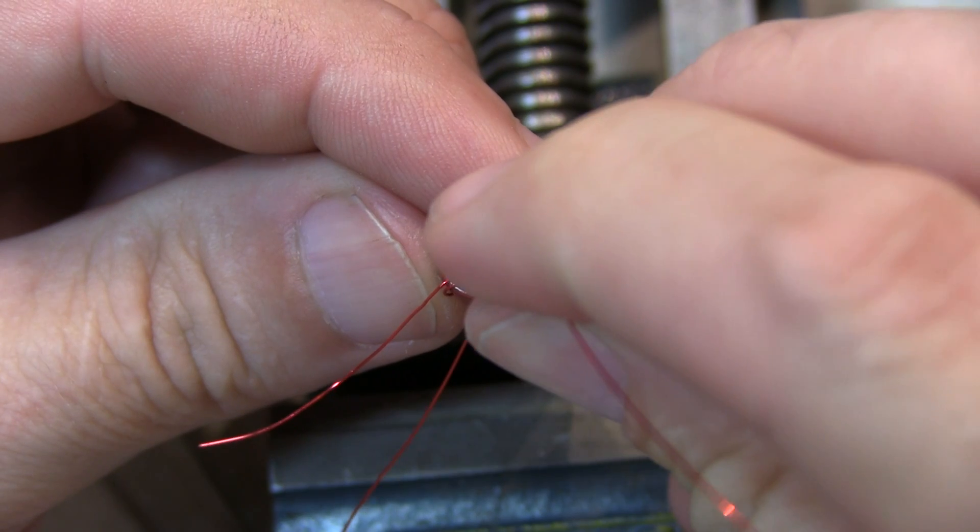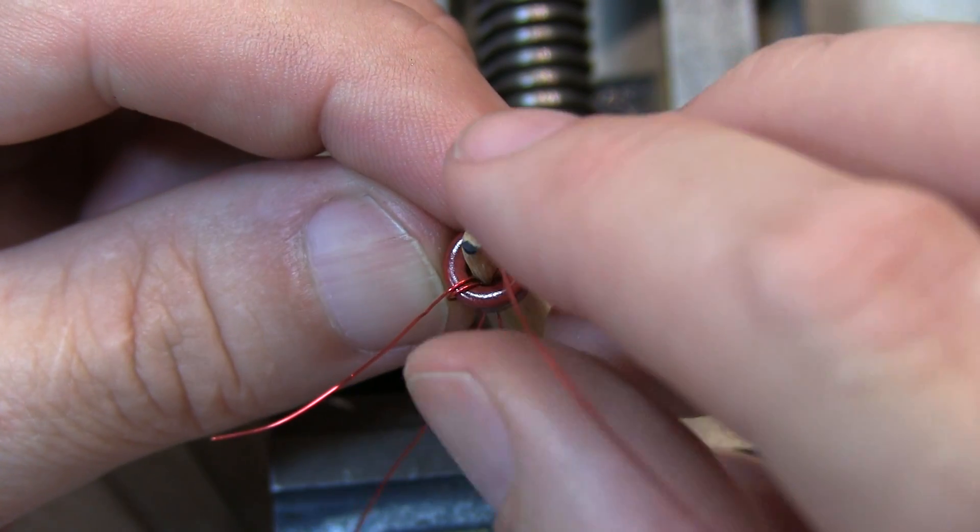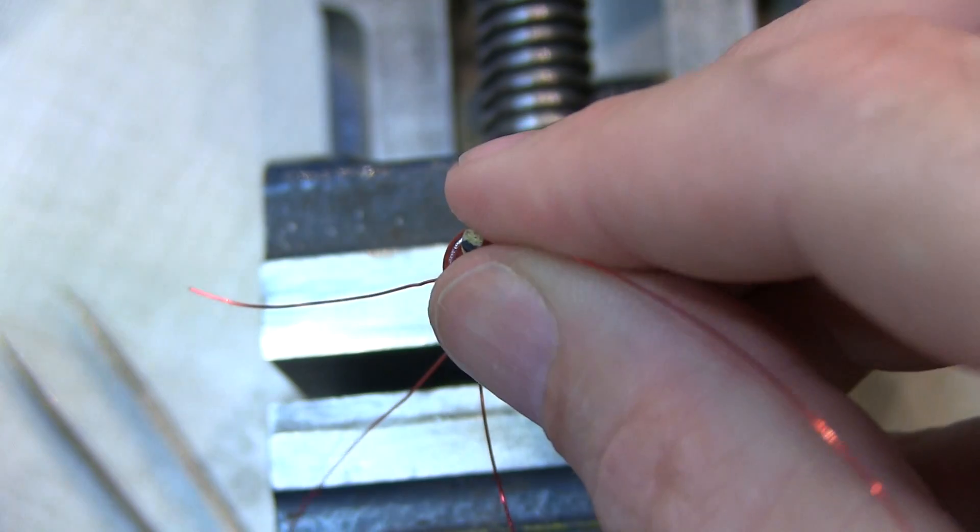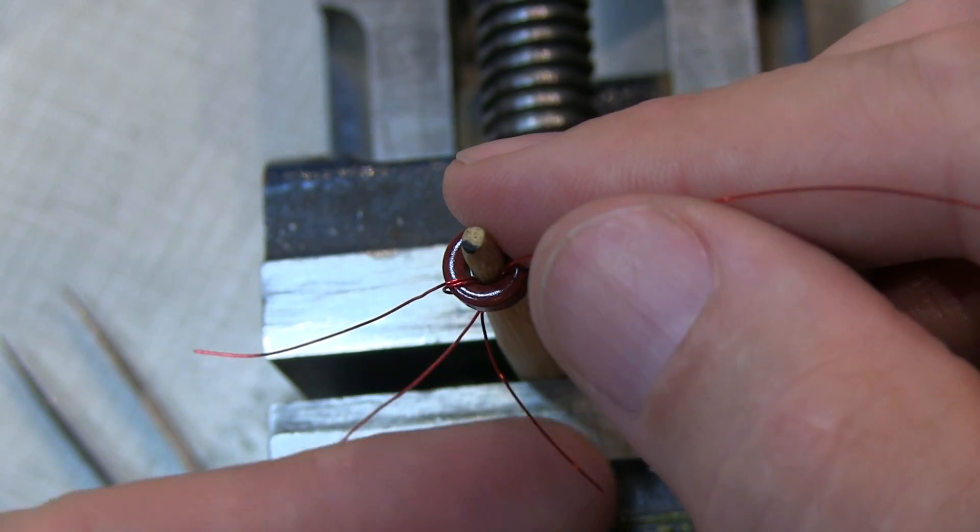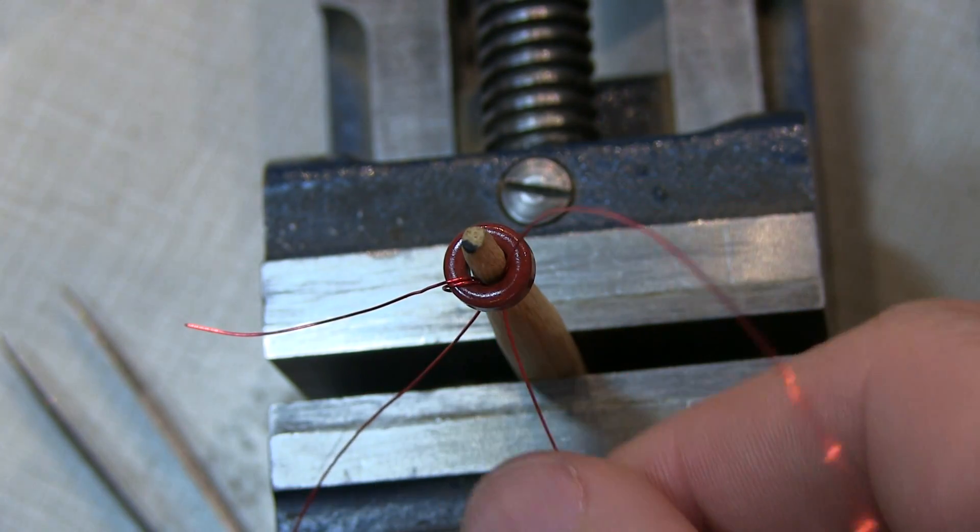I like to kind of push the core up and then even bend the wire a little bit so as I push it down it comes around and I can very easily grab it. You want to be sure that you don't tie the wire in knots as you do this.